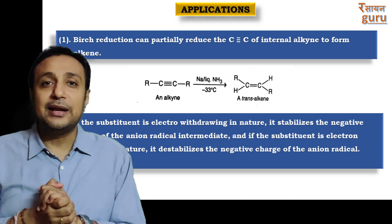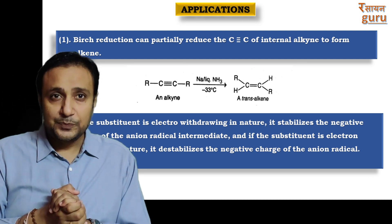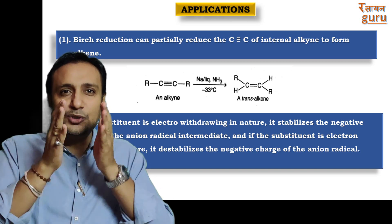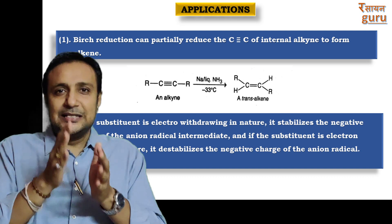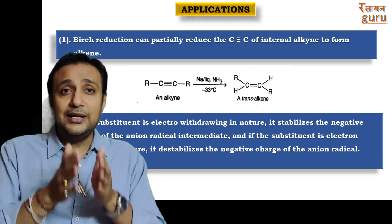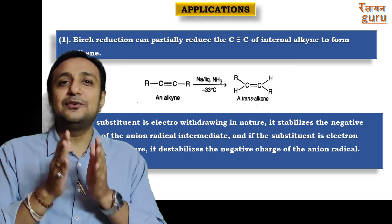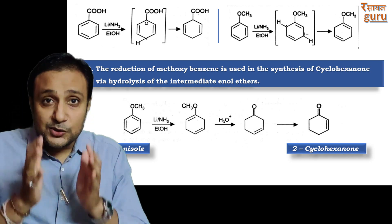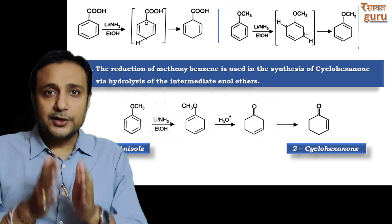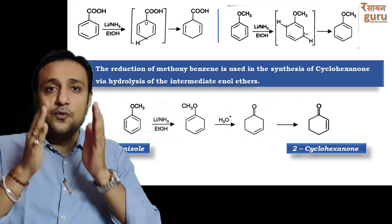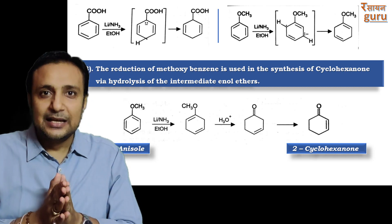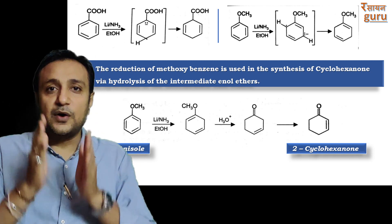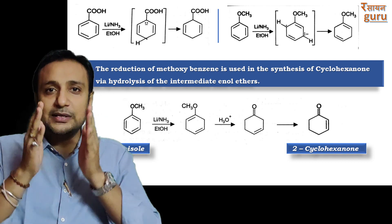The second example is the most important one, which I already mentioned in the reaction part. If the substituent is electron-withdrawing in nature, it stabilizes the negative charge of the anion intermediate; if the substituent is electron-donating, it destabilizes the negative charge of the anion radical. For example, when benzoic acid undergoes Birch reduction, it produces 2,5-cyclohexadiene-1-oic acid. And when anisole undergoes Birch reduction, it produces 1-methoxy-1,4-cyclohexadiene.